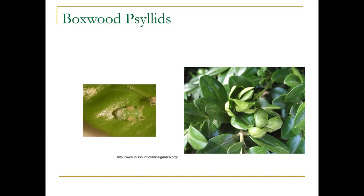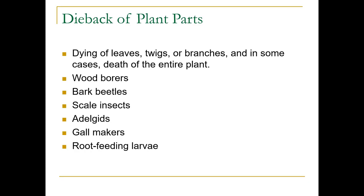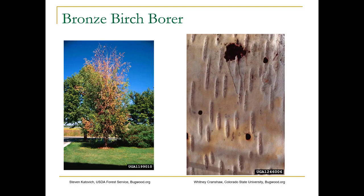You're also going to see dieback of plant parts — twigs or branches, sometimes death of the entire plant. This can be caused by wood borers, bark beetles, scale insects, adelgids, gall makers, and root-feeding larvae. This is bronze birch borer — whole sections of the tree have died back. On Himalayan white birch, the lower foliage looks okay but the top has died. On the trunk you would see D-shaped holes, which are an indicator of bronze birch borer.